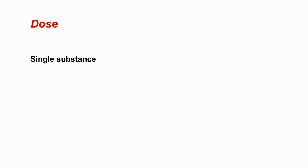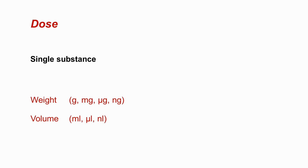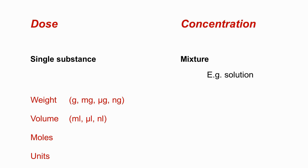To sum up, the term dose is used when you have only one substance — like sodium chloride, paracetamol, glucose, insulin, etc. — and a measured quantity of it is administered in milligrams, milliliters, or units. We use the term concentration when we have a mixture, such as a solution obtained by dissolving a solute in a solvent. In concentration, we express the proportion of the components present in a given quantity of mixture.